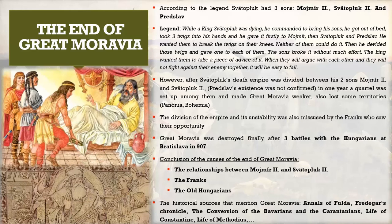After Svätopluk's death, the empire was divided between Mojmír the Second and Svätopluk the Second. They did not take the advice — within one year a quarrel broke out, weakening Great Moravia and causing the loss of Pannonia and Bohemia. Notably, Pretzlau is only mentioned in legend — we only have historical confirmation of Mojmír the Second and Svätopluk the Second.